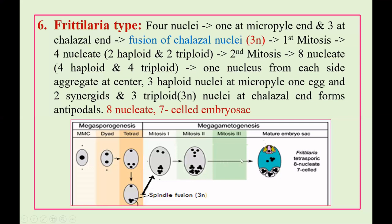The third mitosis is absent, and the mature fritillaria-type embryo sac has an 8-nucleate, 7-celled structure. The polar nuclei consist of 1 haploid nucleus from the micropylar side and 1 triploid nucleus from the chalazal end, making the central cell 4N in nature. After fertilization, the endosperm becomes 5N (4N + 1N from pollen grain).